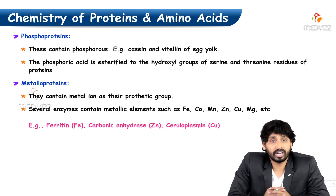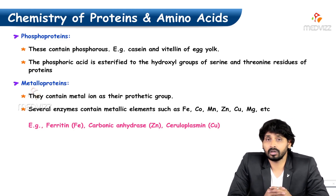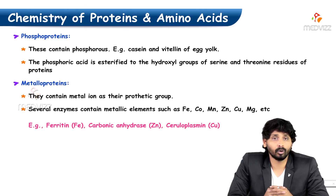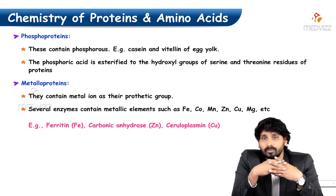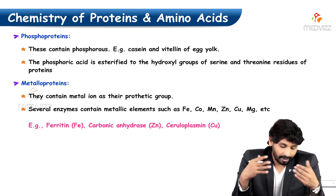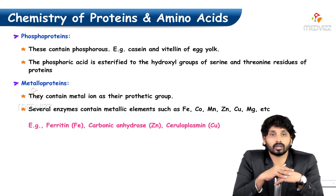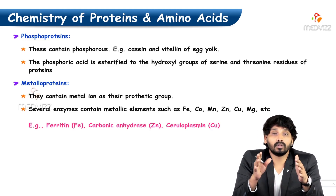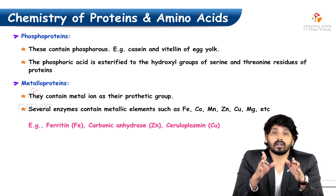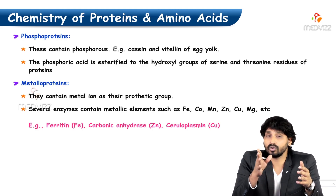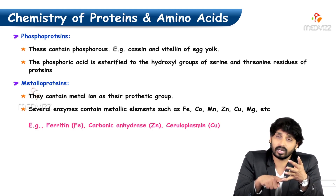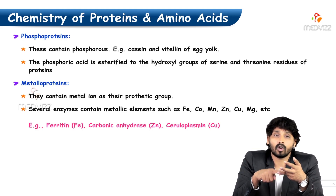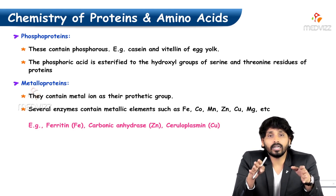Phosphoproteins are proteins in combination with phosphorus — for example, casein. Milk is rich in phosphorus; casein and egg yolk are rich in phosphate groups where phosphoric acid is esterified to the hydroxyl group of serine and threonine residues. Metalloproteins are proteins attached to metals, containing a metal ion as a prosthetic group. Enzymes like ferritin, carbonic anhydrase, and ceruloplasmin require metals for their activity — carbonic anhydrase requires zinc and ceruloplasmin requires copper — serving as co-factors for enzyme activity.